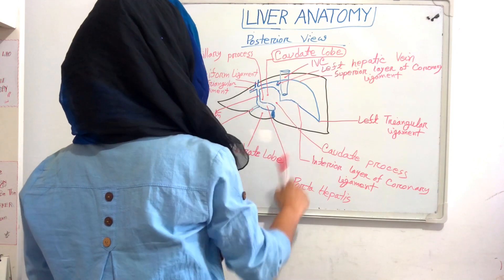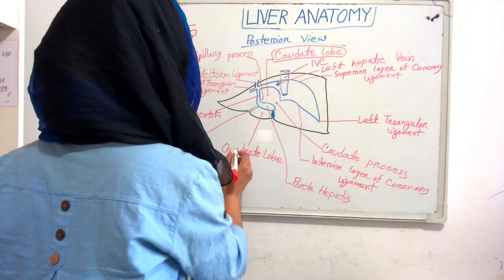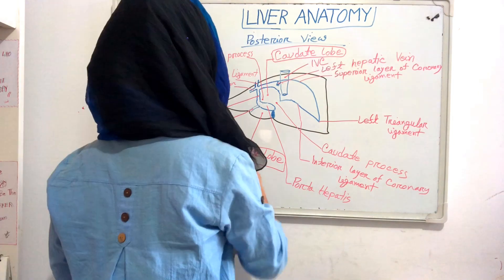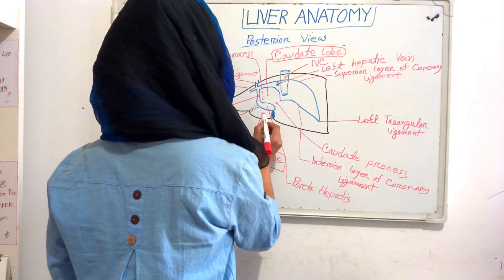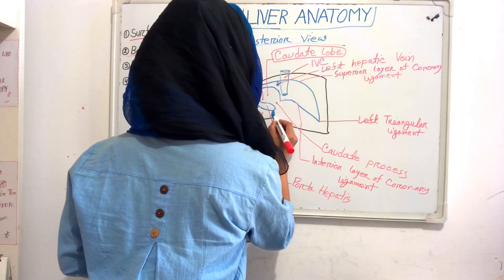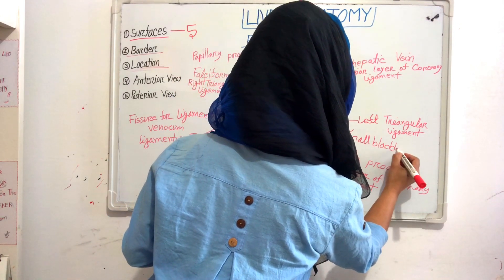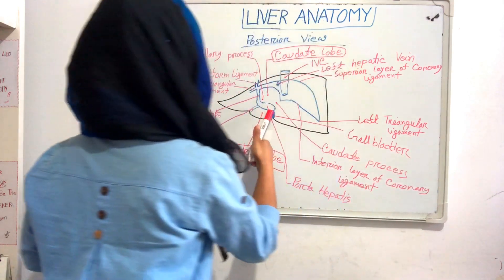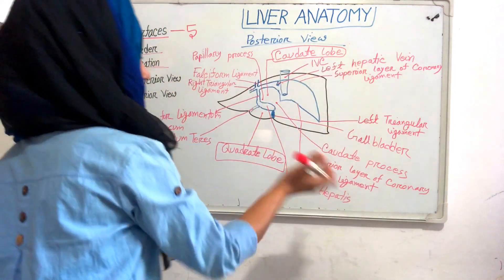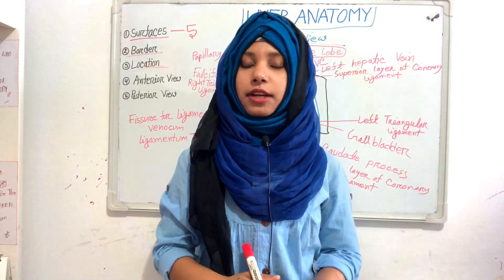The boundary of the caudate lobe: its right side has the inferior vena cava, the left side has the fissure for ligamentum venosum, and inferiorly it has the porta hepatis and the superior surface. The boundary of the quadrate lobe: posteriorly it has the porta hepatis, the right side has the gallbladder, and the left side has ligamentum teres. This is the posterior view of our liver — this is how our liver looks from behind and inferiorly.